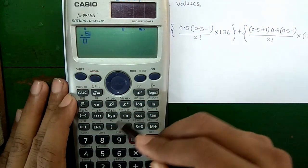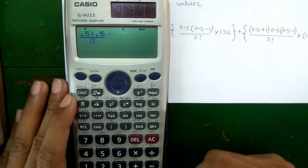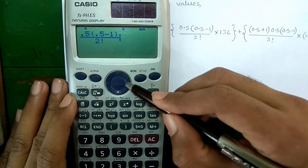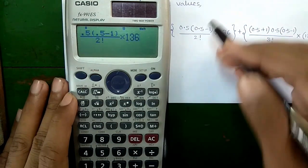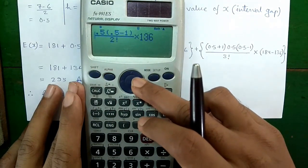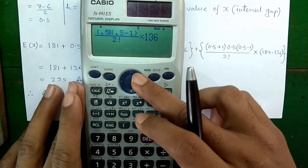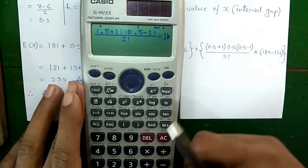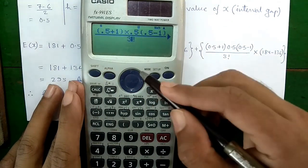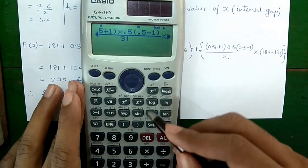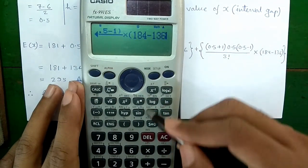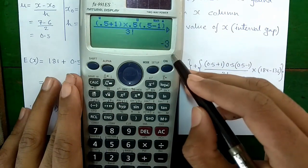You can do this calculation directly on a calculator. For the third term, press: fraction, 0.5, bracket open, 0.5 minus 1, bracket close, divided by 2, then Shift and the factorial button, multiplied by 136, and press equals — you will get −17. For the fourth term, scroll right, open bracket, 0.5 plus 1, close bracket, times 0.5, times (0.5 minus 1), divided by factorial 3, times (184 minus 136), press equals — you will get −3.